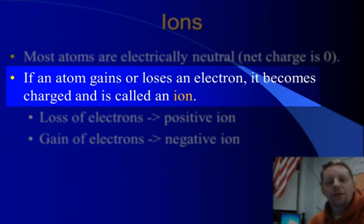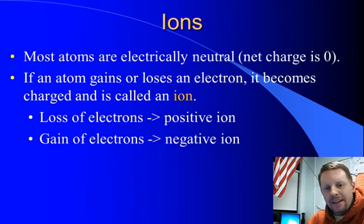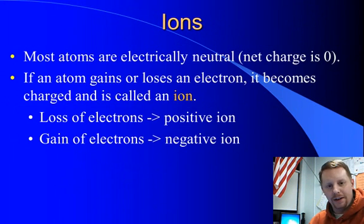If you happen to gain or lose an electron though, you have a net charge, and that is now known as an ion. If that atom loses some electrons, it loses that negative charge, it's left with a net positive charge, so we call that a positive ion. If instead it gains some electrons, however many, it now has a net negative charge, and we call that a negative ion.